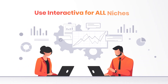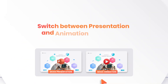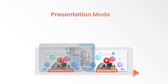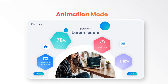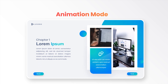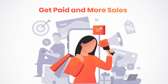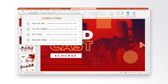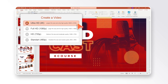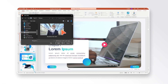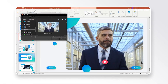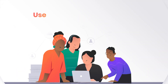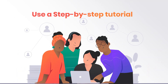Use Interactiva for all niches. Switch between presentation and animation video mode. Get paid and get more sales from your interactive content. Have full HD and 4K resolution. Embed video into your slides. Have a ready-made, high-converting landing page. Use a step-by-step tutorial.